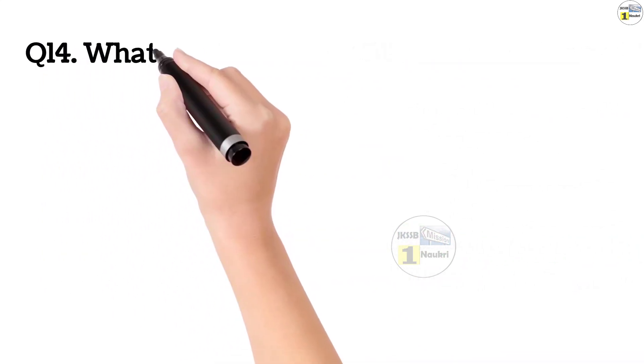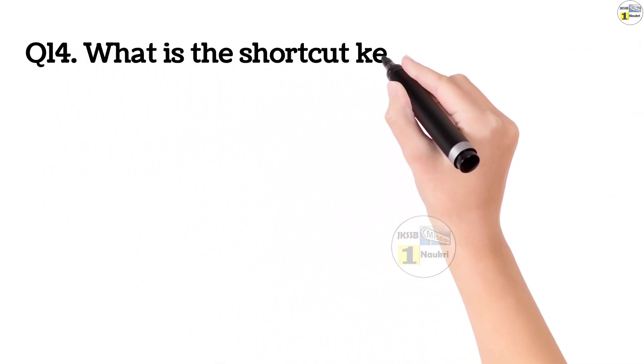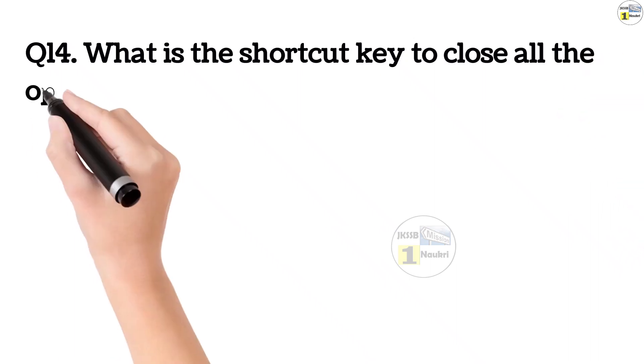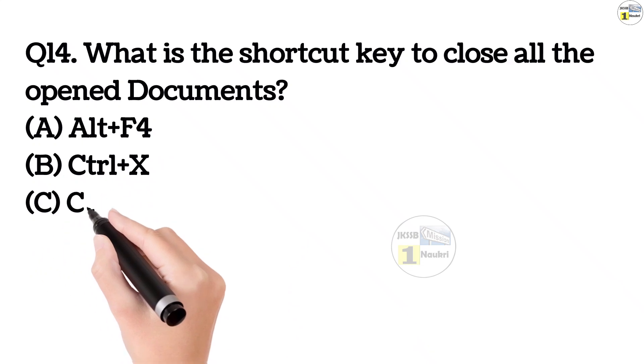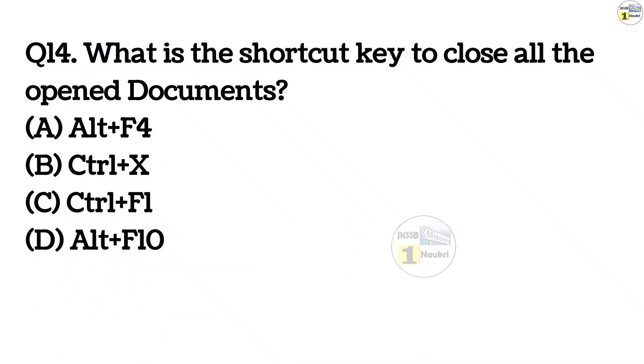Question number 14. What is the shortcut key to close all the open documents? Option A, alt plus F4. Option B, control plus X. Option C, control plus F1. Option D, alt plus F10. What is the shortcut key to close all the open documents? This answer is correct. Option A, alt plus F4.